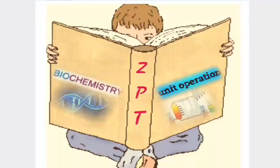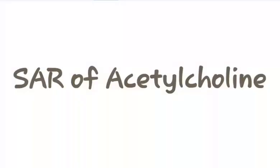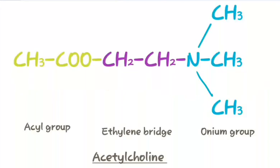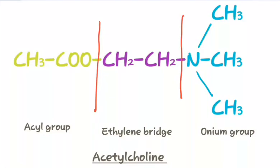Hello everyone, myself Ziel Bhat, and welcome to my channel Ziel's Pharmacy Tutorial. Today we are going to study about the SAR of acetylcholine. This is the general structure of acetylcholine, which can be divided into three parts: first is the onium group, second is the ethylene bridge, and the third is the acyl group. Now let us study about the structural activity relationship due to the modifications in all three groups.